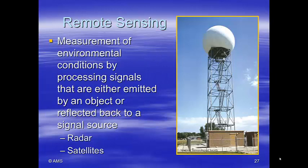We also have remote sensing — sensing the environment by using signals that are reflected off an object or the atmosphere, or by processing signals emitted by the atmosphere. For example, radar sends out a signal, it hits a cloud, comes back, and we measure the time it took to determine how far away the cloud is. Satellites record images that are emitted by an object.